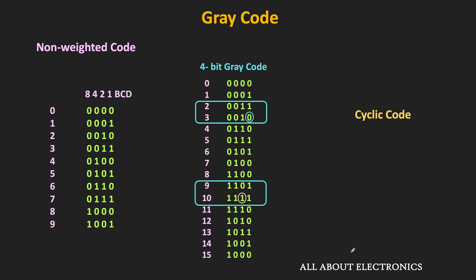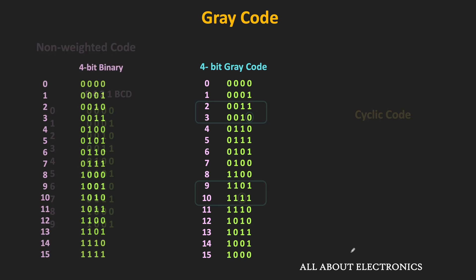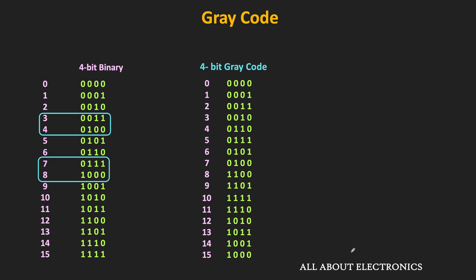The question is: what is the use of this gray code and where is it used? To understand that, let us compare the 4-bit gray code with the 4-bit binary numbers. In the case of binary numbers, when we move from one number to the next, sometimes multiple bits change at the same time. For example, when we move from binary 3 to binary 4, three bits change simultaneously. When we move from 7 to 8, all bits change at the same time.